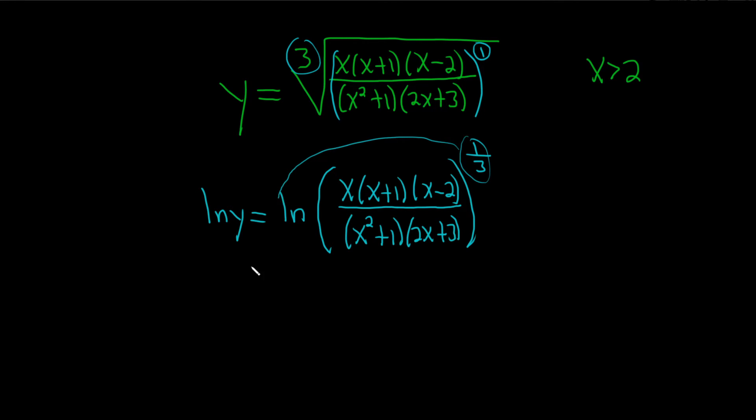That's called the power rule for logs. So ln of y equals 1 third natural log of all of that stuff. So x, x plus 1, x minus 2, all divided by parentheses x squared plus 1, and then 2x plus 3. Beautiful stuff.